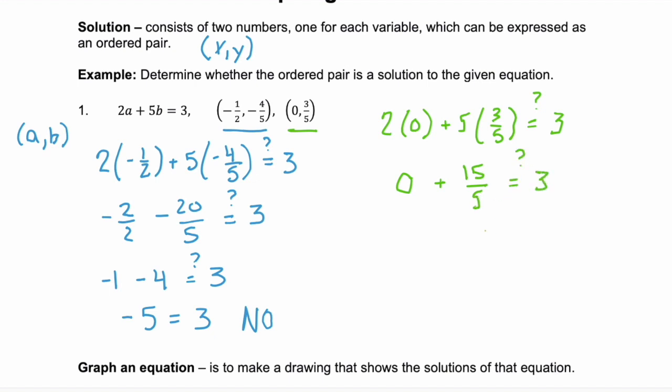Well, fifteen-fifths simplifies to three. And three does equal three. So yes, the second ordered pair is a solution.